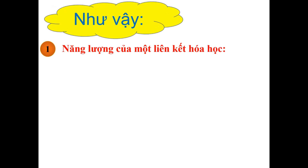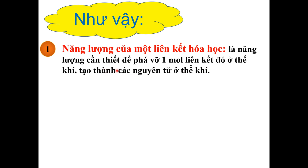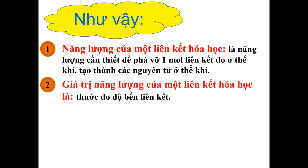Như vậy năng lượng của một liên kết hóa học là năng lượng cần thiết để phá vỡ một mol liên kết đó ở thể khí thành nguyên tử. Chúng ta cần một cái năng lượng tính bằng kJ trên một mol để phá vỡ hết tất cả các liên kết trong đó thành các nguyên tử ở thể khí. Giá trị của năng lượng đo bằng độ bền liên kết: năng lượng liên kết càng lớn thì độ bền càng lớn, như liên kết 3 của nitrogen bền hơn rất nhiều so với hydrogen và oxygen.